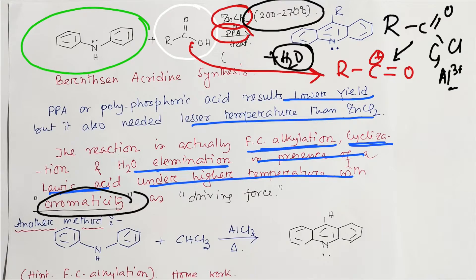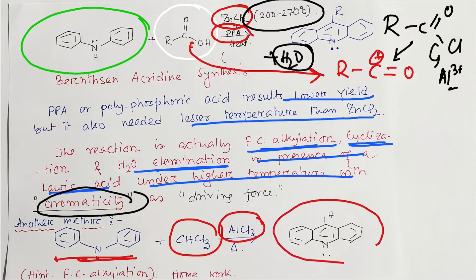As a homework task, I'm giving you another example: diphenylamine reacts with chloroform and AlCl₃ — this also produces acridine, but in this case it is unsubstituted (H instead of R). Please try this mechanism yourself. As a clue: this reaction goes through Friedel-Crafts alkylation.